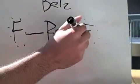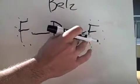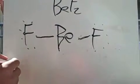Here, we have this linear shape, which satisfies the exception of Be and the octet rule for fluorine. To check that we have the right amount of electrons, I'm going to add it up here.